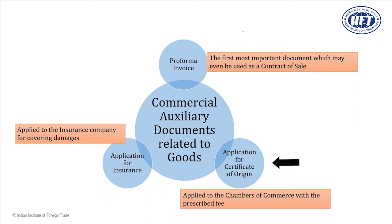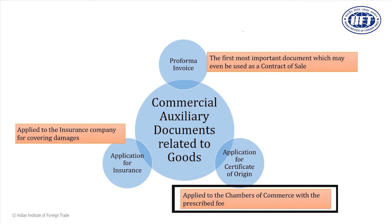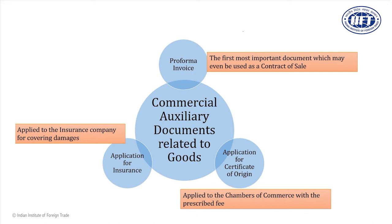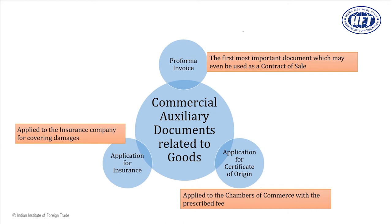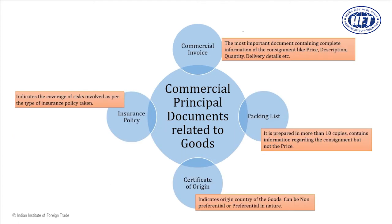The application for certificate of origin is submitted to the chambers of commerce along with the requisite fee. The application for insurance is applied to the insurance company for covering various risks, depending upon the type of insurance obtained. These auxiliary documents are used for preparing the principal documents. The commercial principal documents related to goods are four in number: commercial invoice, packing list, certificate of origin, and insurance policy. The proforma invoice is mainly used for preparing the commercial invoice and packing list.